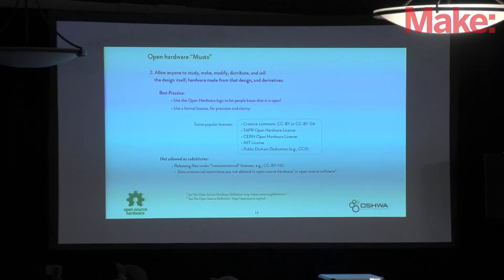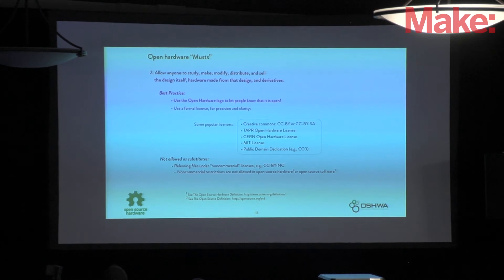On allowing anyone to study, make, modify, and distribute: the best practice is to use the open source hardware logo so people know it's open, and to use a formal open source hardware license. Some popular ones are Creative Commons CC BY or CC BY-SA, TAPR or CERN open hardware licenses, the MIT license, or a public domain declaration. What is not allowed is a non-commercial license — non-commercial clauses are not compliant with either the definition of open source hardware or open source software.